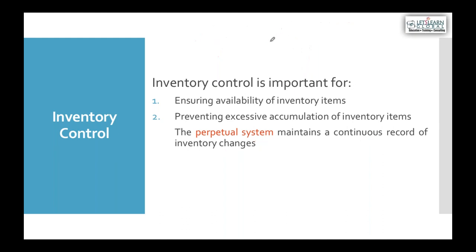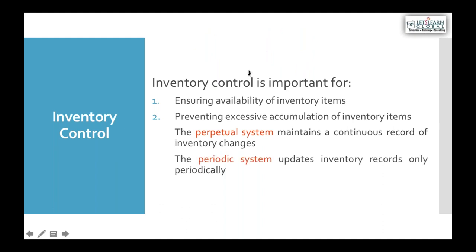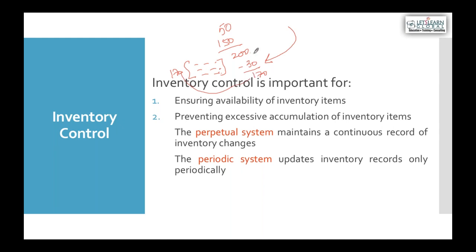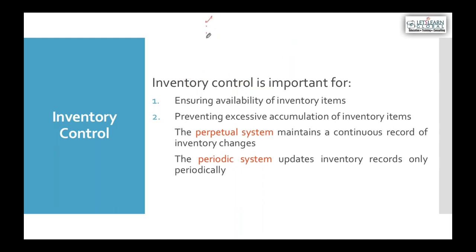Such a system is called a perpetual inventory system - a complete record is maintained for the flow of inventory in and out, so inventory levels can be monitored continuously. In contrast, a periodic inventory system works differently: you buy material, sell goods, but only know how many units were sold. To find remaining inventory, you physically verify the warehouse - for example finding 30 units left - and work backwards to calculate cost of goods sold.